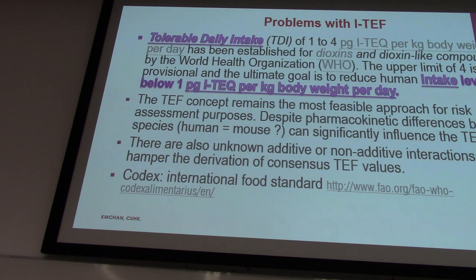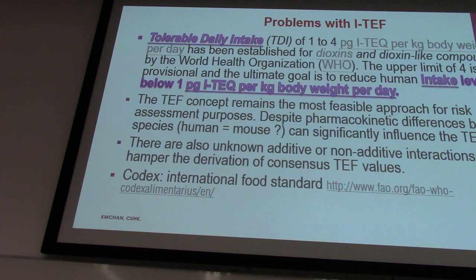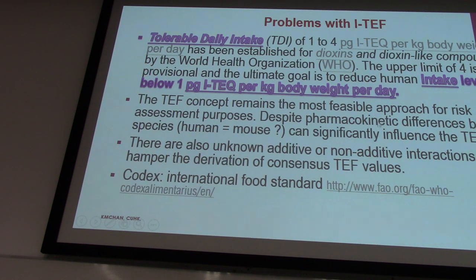Why is it not 1.5? Just for convenience — one to four is the range. We better set it down to one, but most of the time we could hardly get it down to one. This concept may not be perfect, but so far it is the most reliable and useful, using TEF values to calculate the CITEQ.